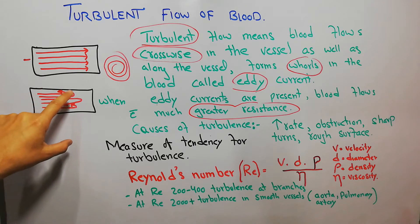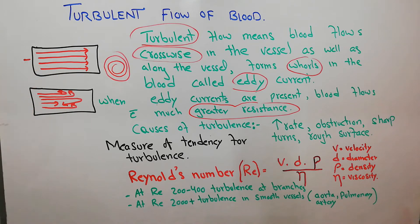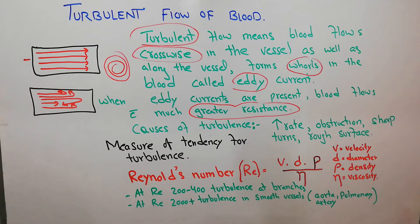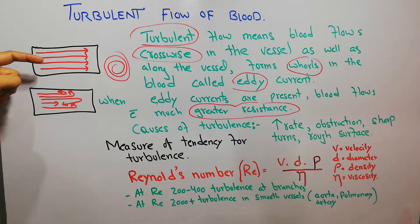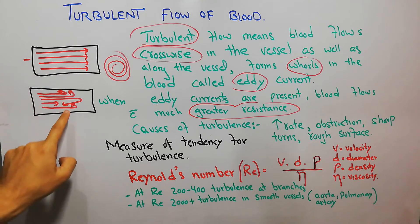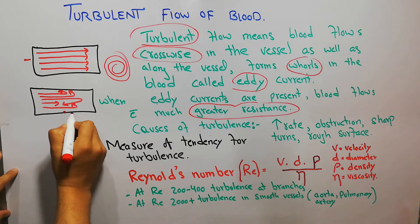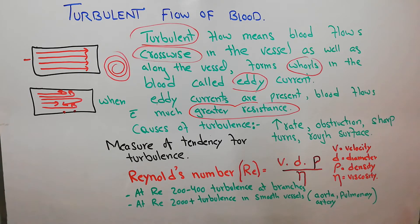The cause of turbulent blood flow is basically a rough surface. In laminar flow, the inside of the vessel is most of the time very smooth, which leads to streamline flow. But in turbulent flow, the surface of the blood vessel may be rough due to various reasons. This is one cause of turbulence, but there are other causes as well.